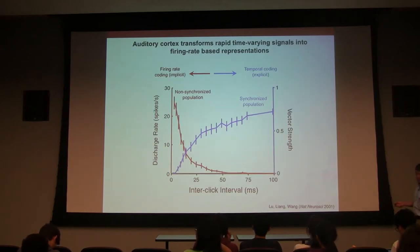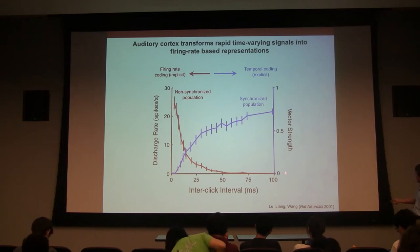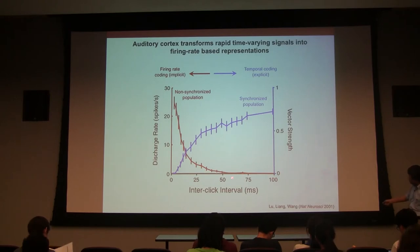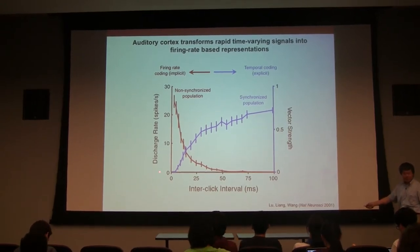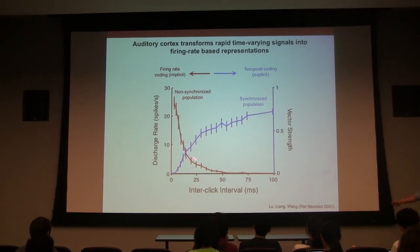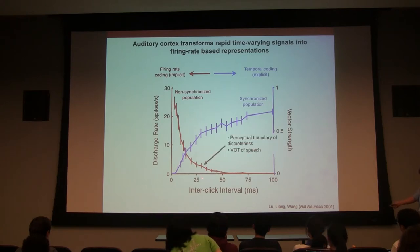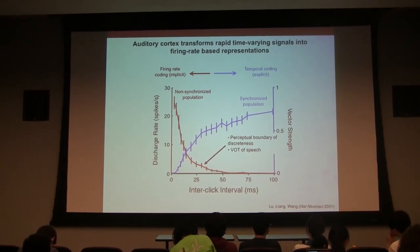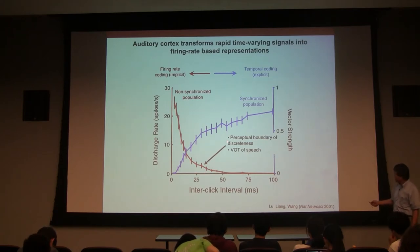For the synchronized neuron population, here is the vector strength — the measure of synchronization — versus inter-click interval (slow to fast). At slow speeds, most neurons can proportionally track the stimulus. As the signal becomes faster, the proportion of neurons that can track it decreases dramatically. Meanwhile, the non-synchronized population, using firing rate to encode, begins to pick it up. The border is about 25-30 milliseconds, around 30 hertz — exactly where your perception of click trains changed from discrete to continuous in the homework.